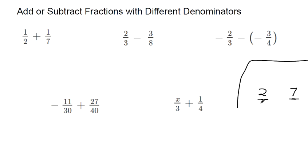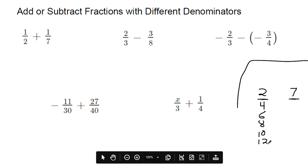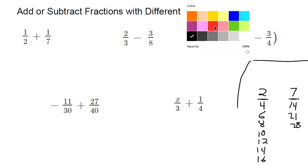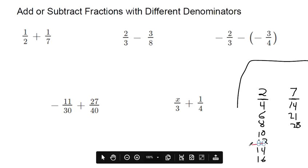Start adding them by themselves. 2 plus 2 makes 4, plus 2 makes 6, plus another 2. These are all multiples of 2. Then list some multiples of 7. 7 plus 7 makes 14, plus another 7, plus another 7. Try to find something in common between the two. The multiple that's in common here, we have a 14 in this column and a 14 in this column.